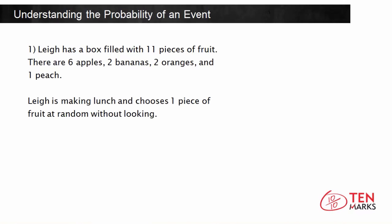And to do this, you need to know the formula for finding probability. The probability of an event is equal to the number of times that the event can occur divided by the total number of possible outcomes.